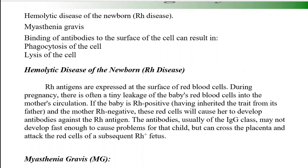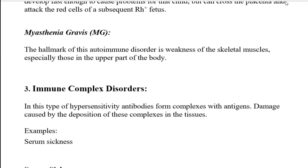The next disease is myasthenia gravis, which is also a Type 2 hypersensitivity and an autoimmune disorder. Just as the mother's immune system worked against the baby — which was part of her own body — similarly in myasthenia gravis, your immune system starts working against your own body cells. This is why it is called an autoimmune disorder: your immune system automatically works against your own body cells. Myasthenia gravis refers to severe muscular weakness, caused because the immune system attacks your own body cells, leading to muscular weakness in all the upper parts of the body.